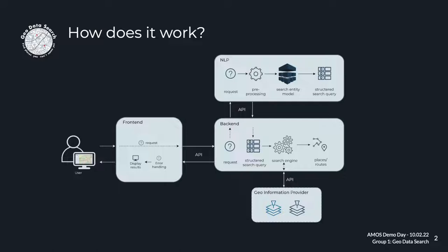NLP stands for Natural Language Processing. The NLP component is responsible for converting the user's natural language input into a machine-readable format, in our case JSON. When you search for something, the request is sent from the frontend via the backend to the NLP component, where relevant information is extracted for further processing, such as what is being searched for. The result is sent to the backend, which uses this data to make a request to external data providers and sends the answer to the frontend and converts it into a downloadable KML file.